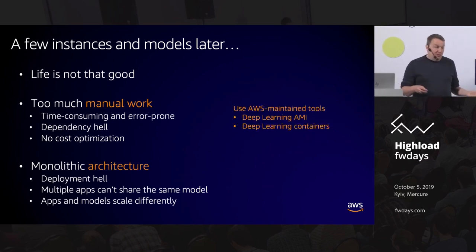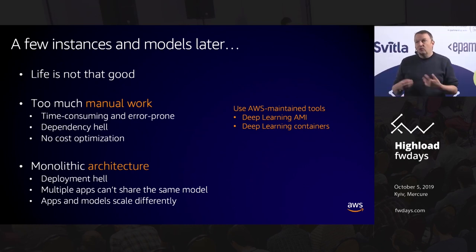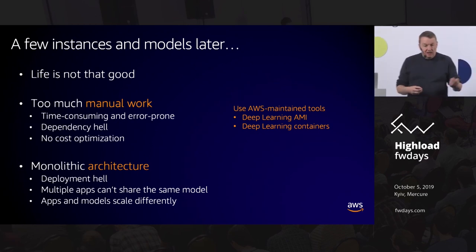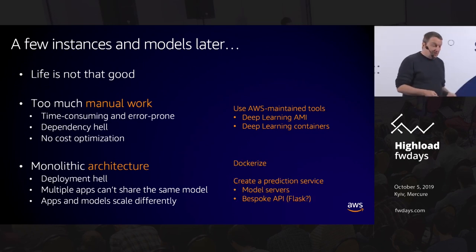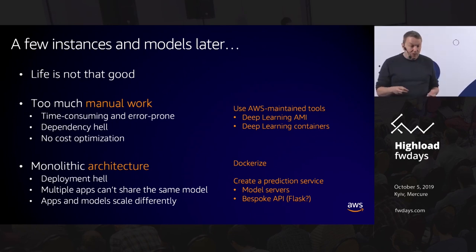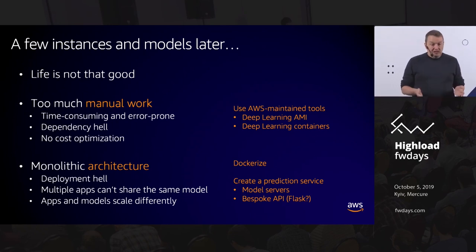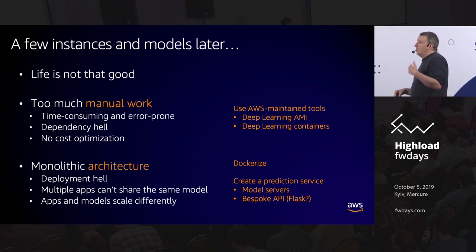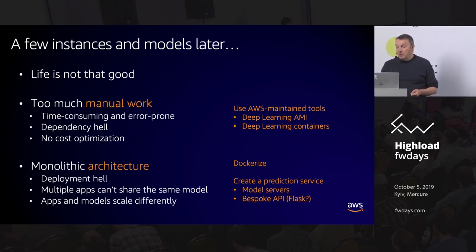A couple of options: stop doing manual work — I'll talk in a minute about tools to help you focus on the model itself rather than managing VMs. The monolithic architecture can at least be Dockerized to solve deployment problems, and hopefully you can break it into pieces — create a prediction service, separate the business logic from the ML model using model servers or a specific API. Basic techniques we've all used for years, and they apply to ML too.